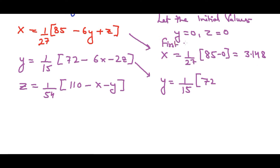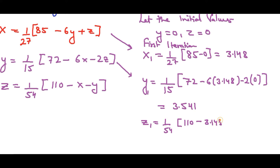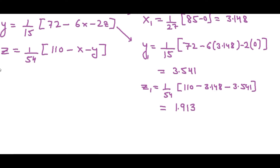This is the first iteration. We substitute x₁ = 3.148 into the y equation, giving y₁ ≈ 3.541. Then z₁ = (1/54)(110 − x₁ − y₁) = (1/54)(110 − 3.148 − 3.541) ≈ 1.913. So the first iteration gives x₁ = 3.148, y₁ = 3.541, z₁ = 1.913.